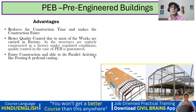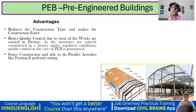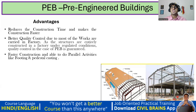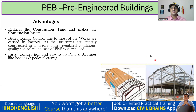Third is faster construction and the ability to do parallel activities, like footing and pedestal casting. Everything you see above ground is a pre-engineered building, but below that you have a pedestal and footing. The moment you are doing excavation, you can simultaneously start fabrication work in the factory. In contrast, with concrete structures, you must do excavation first, then footing, then column, then backfilling, then plinth beam — no parallel activities are possible.